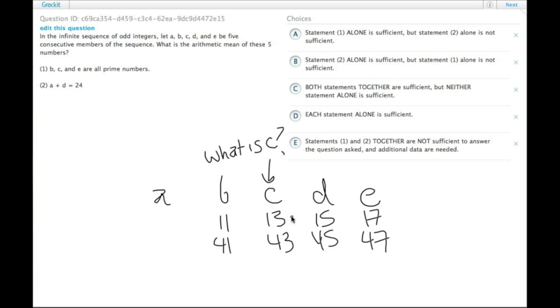And since there's more than one choice here, C could, and this pattern repeats again, so since we have more than one choice for C, this is a value question, we need a single value, statement one is insufficient. We get rid of A and D.